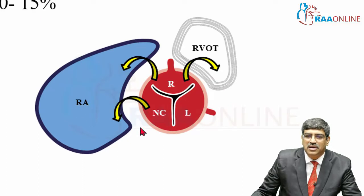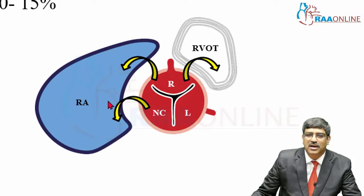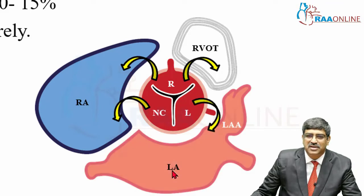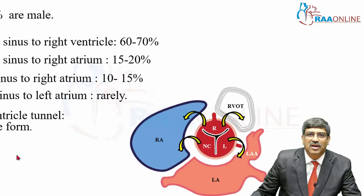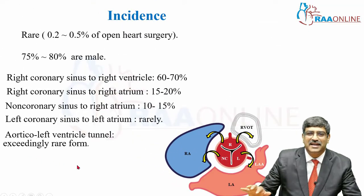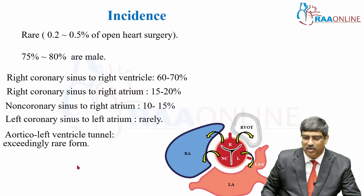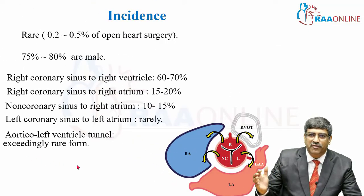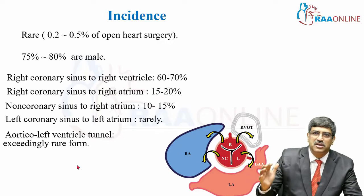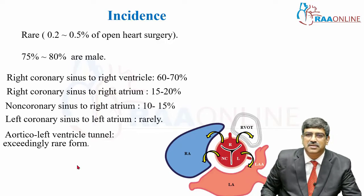The third, less common variety arises from the non-coronary sinus and goes into the right atrium. The other two varieties, which arise from the left coronary sinus to the left atrium, are the aortico-left ventricle tunnel — an exceedingly rare form. These are the various types of aneurysm which go into various chambers.